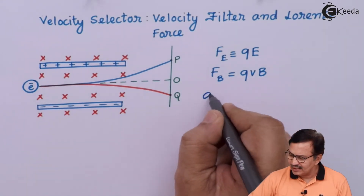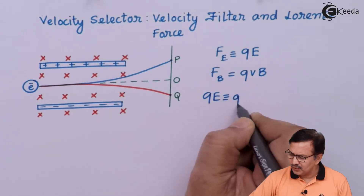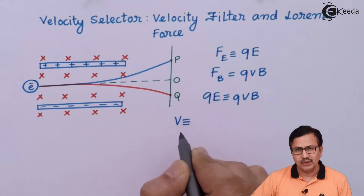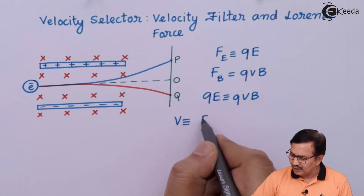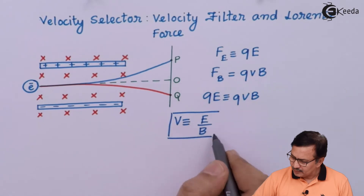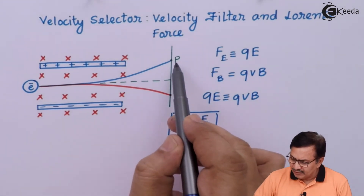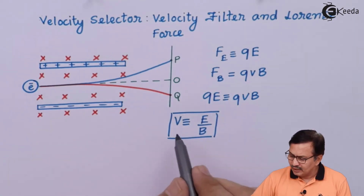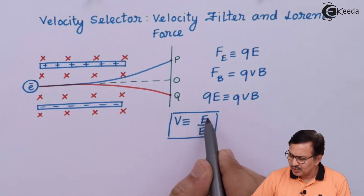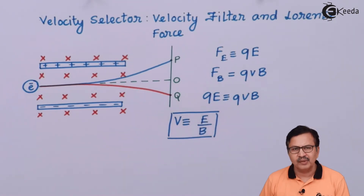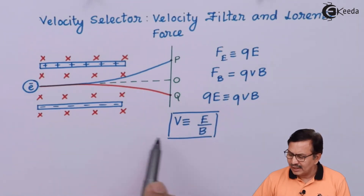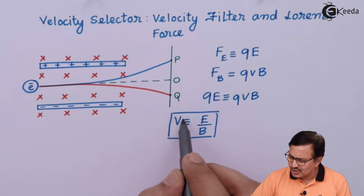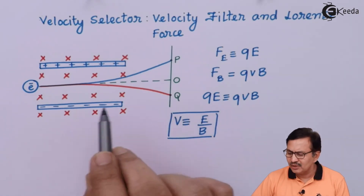The situation will be: QE = Q × V × B, and therefore V = E/B. This means that if the electric and the magnetic force are equal, then the velocity V is equal to E/B. Thus this entire assembly is going to act like a velocity filter — it will allow only electrons with this particular velocity to pass through.